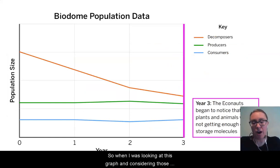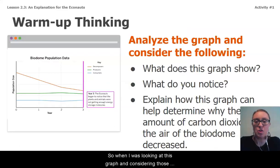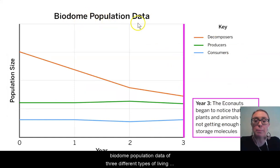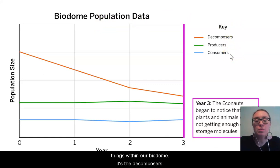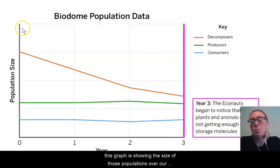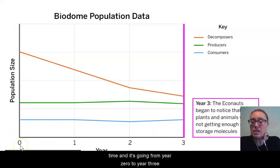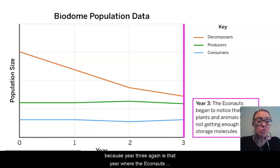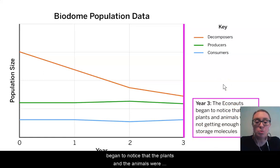When I was looking at this graph and considering those three questions, I am noticing first that the graph is showing biodome population data of three different types of living things within our biodome — the decomposers, the producers, and the consumers. And that this graph is showing the size of those populations over time, going from year zero to year three, because year three is that year where the Econauts began to notice that the plants and the animals were not getting enough of those energy storage molecules.